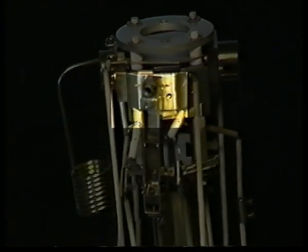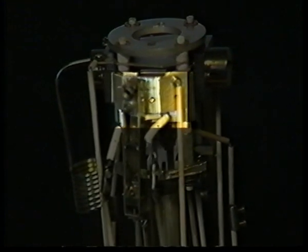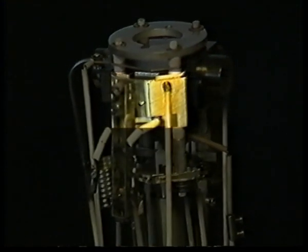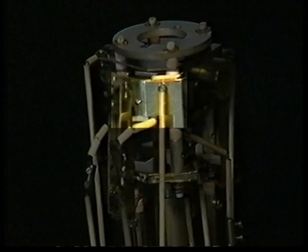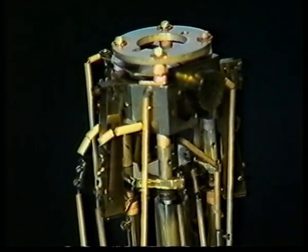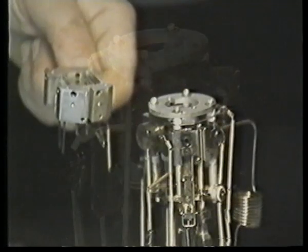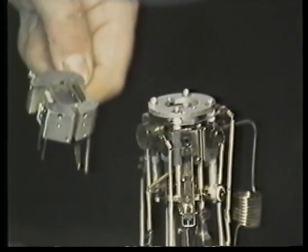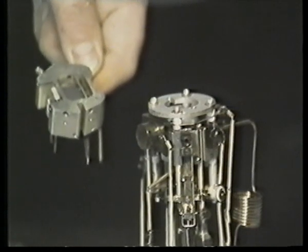In the middle of the apparatus is the iron block which you can see here highlighted. This is where the ionization actually takes place and is a type of ionization chamber. Here is another view where on the left we are showing another separated iron block.